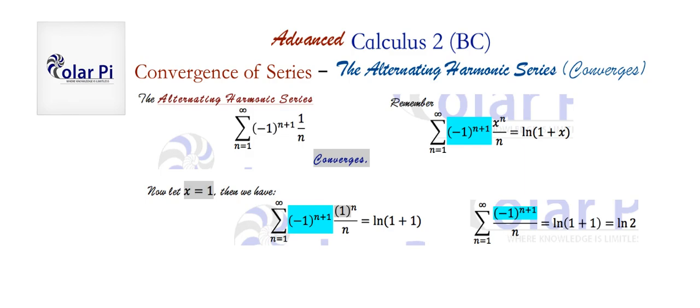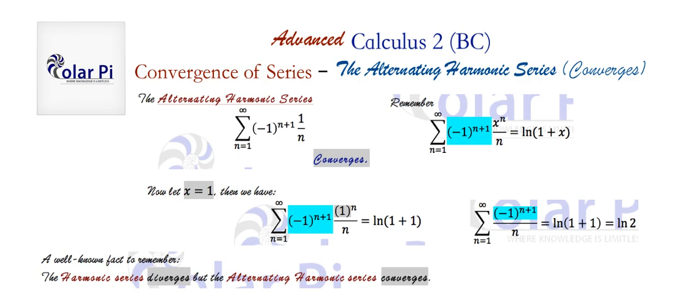So we not only know that the alternating harmonic series converges, we know what it converges to. And as I've already said, a well-known fact is that the harmonic series diverges, whereas the alternating harmonic series converges.